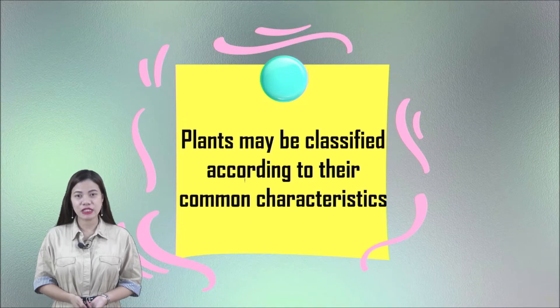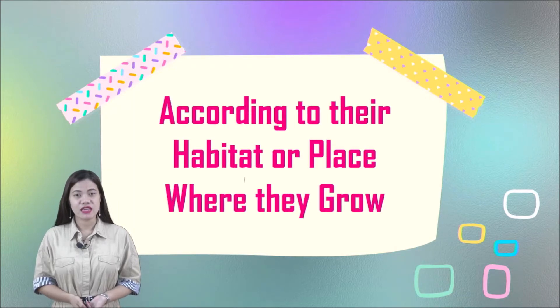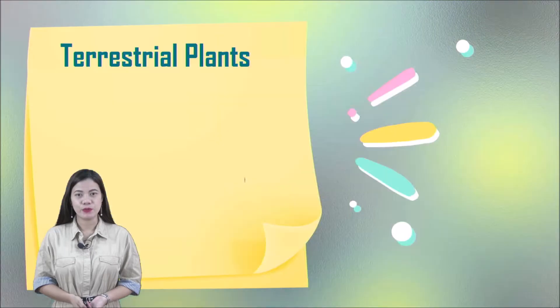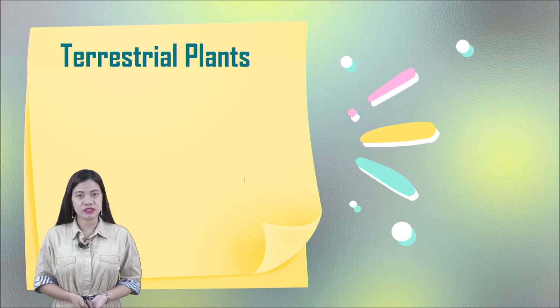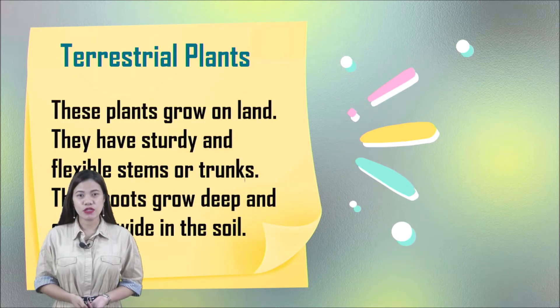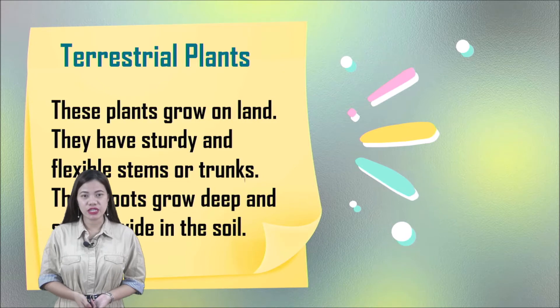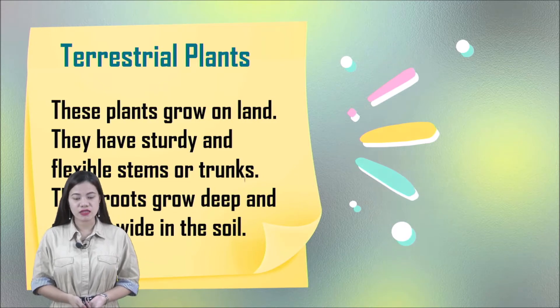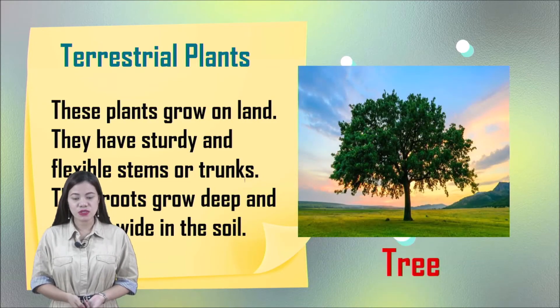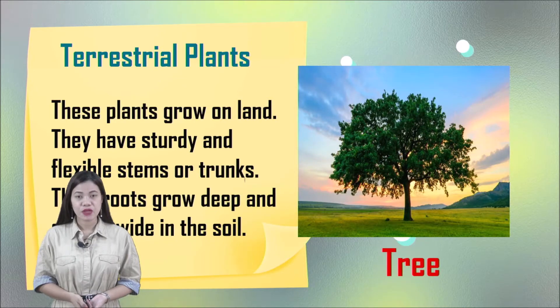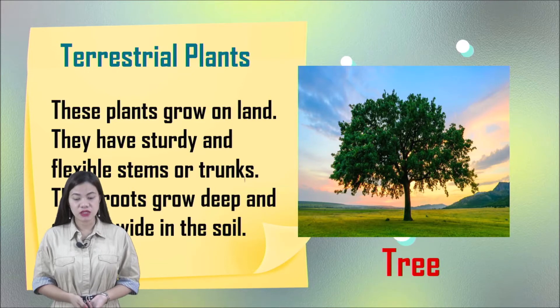Plants may be classified according to their common characteristics. The first characteristic is according to their habitat, or place where they grow. First, we have terrestrial plants. These plants grow on land. They have sturdy and flexible stems or trunks. Their roots grow deep and spread wide in the soil. Sturdy means solidly built and strong.